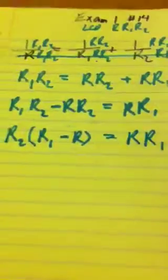Now that I have all the R2's over on this side, I'm going to factor it out of both of those. So R2 will leave me with an R1 minus an R, and that'll just equal R times R1.